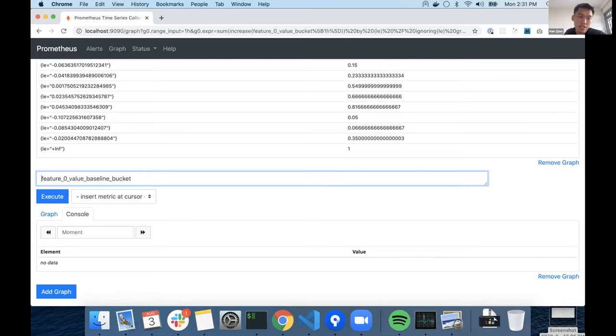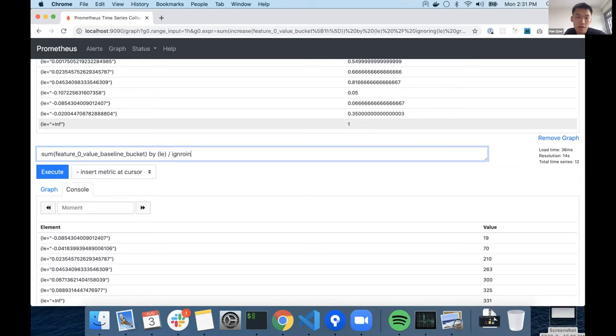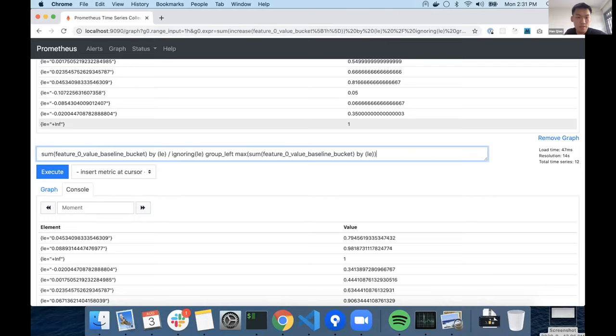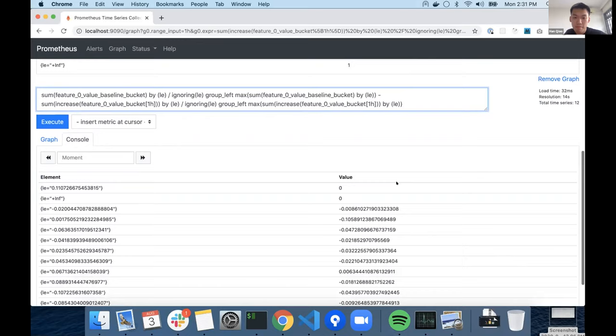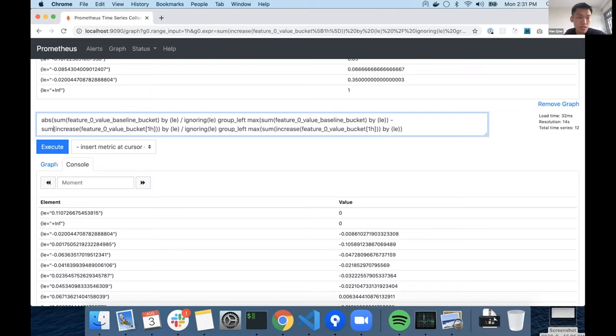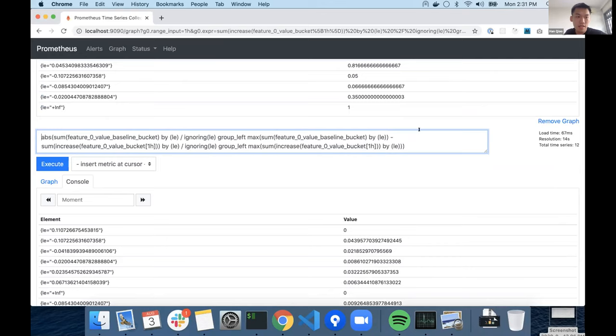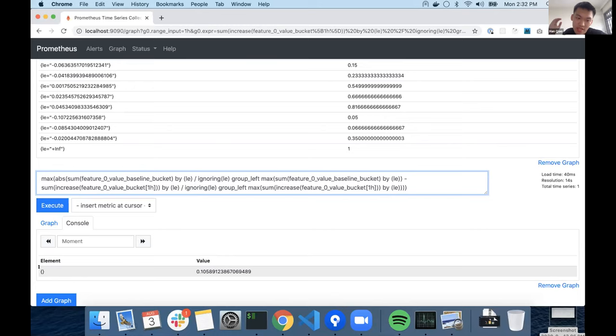So we can also do the same for the training distribution so that eventually we will take the difference between the two and compare where is the max. So for training distribution, we will look at these baseline values. But we don't need to take the increase because the training distribution never changes until you re-trigger the training. So we simply can call sum by LE, which gives you a bunch of numbers. And similarly, we do ignoring LE divided by to give you the percentage of values. Now let's take the difference between the two.